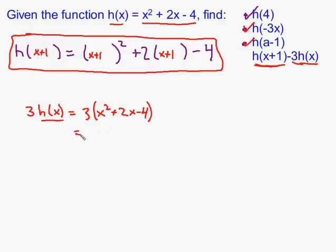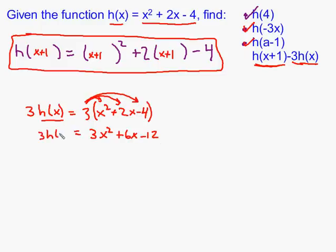So to summarize: when you multiply by 3, make sure you do it to all terms, giving 3x squared plus 6x minus 12. We found h of x plus 1 — that was all of that expression. We found 3 times h of x — that was this. Now it's saying take the two things and subtract them.